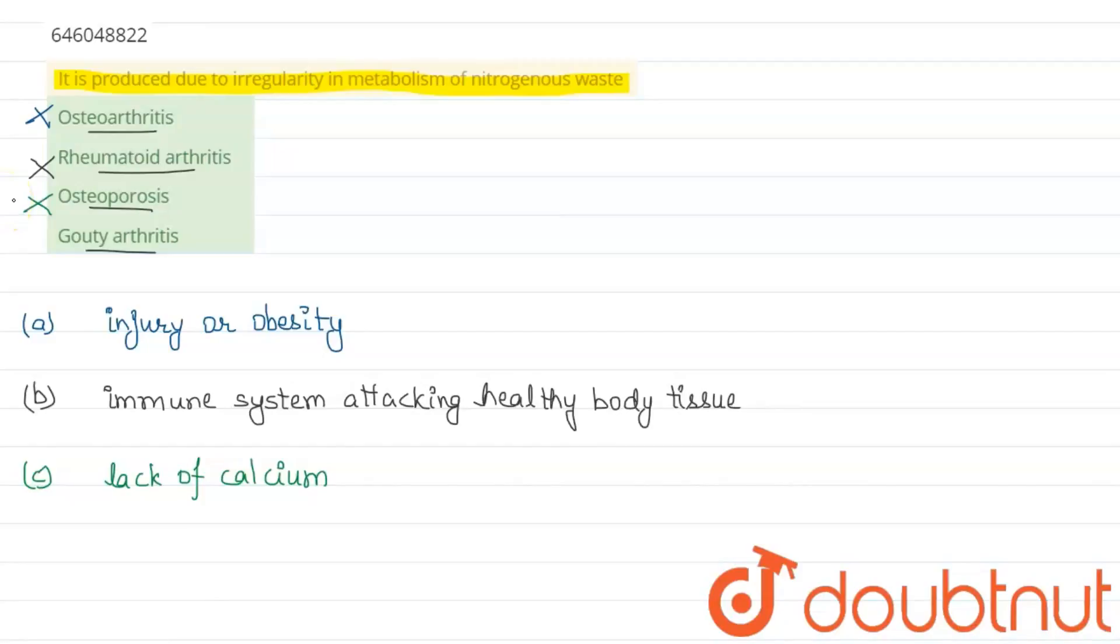Last option is gouty arthritis. So gouty arthritis is an inherited disorder of purine metabolism.